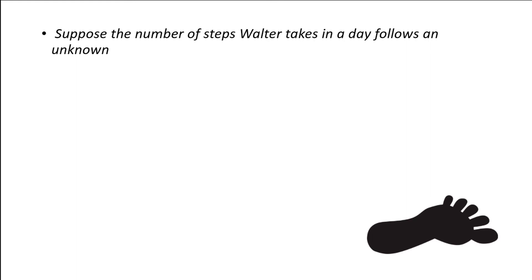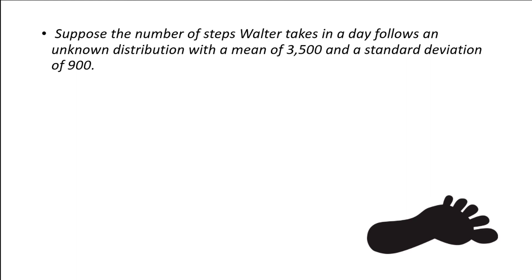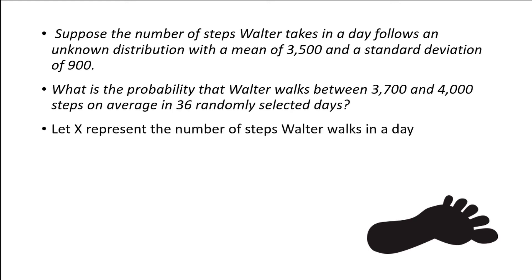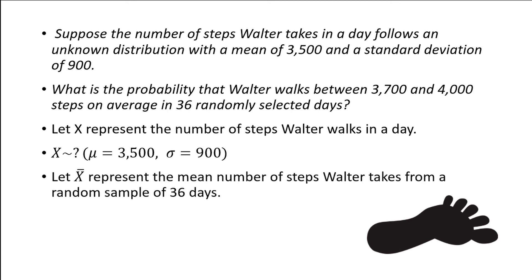Let's look at another example. Suppose the number of steps Walter takes in a day follows an unknown distribution with a mean of 3,500 and a standard deviation of 900. What is the probability that Walter walks between 3,700 and 4,000 steps on average in 36 randomly selected days? If we let x represent the number of steps Walter walks in a day, then x follows an unknown distribution with a mean of 3,500 and a standard deviation of 900. Since n is 36, which is greater than or equal to 30, we can use the Central Limit Theorem. If we let x-bar represent the mean number of steps Walter takes from a random sample of 36 days, x-bar follows a normal distribution with a mean of 3,500 and a standard deviation of 900 divided by the square root of 36, which simplifies to 150.